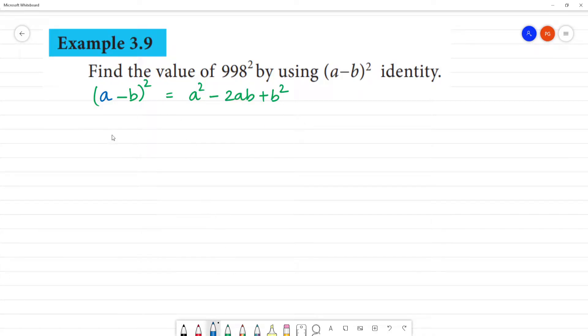So in the 998, 998 can be written as 1000, 1000 minus 2. 1000 minus 2 the whole square. 998 is 1000 minus 2, so A is written as 1000, B is written as 2.